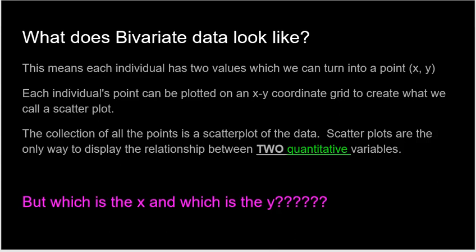So if you've ever heard of a scatter plot before, it's exactly what we're talking about. The collection of all the points is a scatter plot of the data. Scatter plots are the only way to display the relationship between two quantitative variables. Again, we're not comparing heights from this group of kids versus heights from this group of kids. If we were just comparing, we'd use box plots, histograms, stem and leaf plots. We're not comparing. We're looking for relationships. That's a big difference, right? We're trying to determine, does X have any relationship to Y?